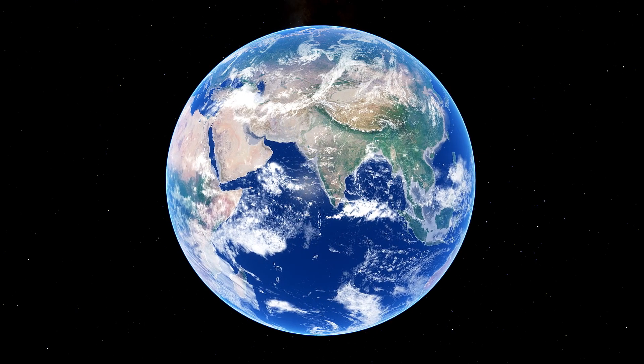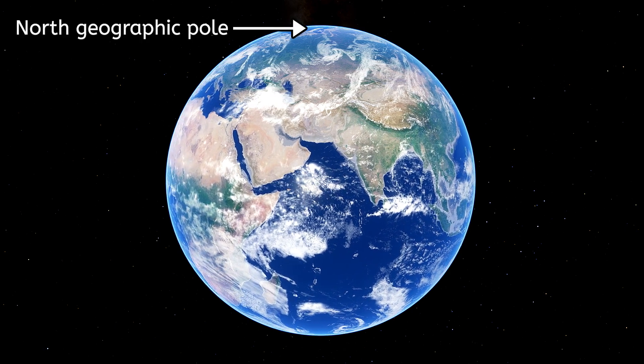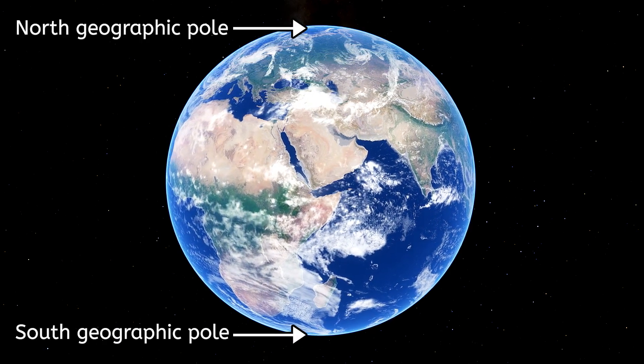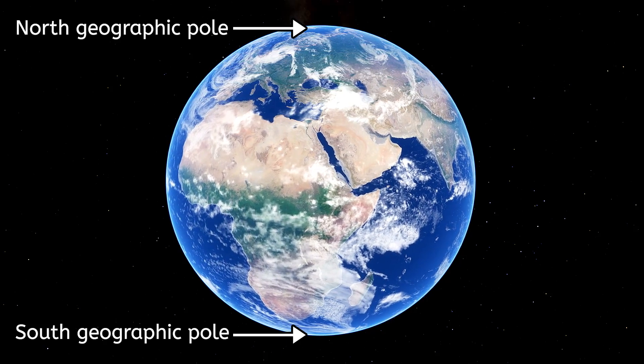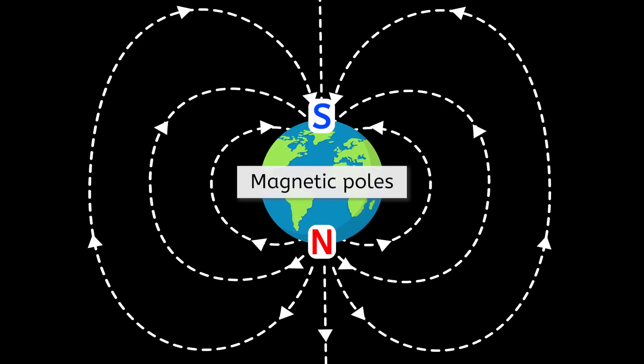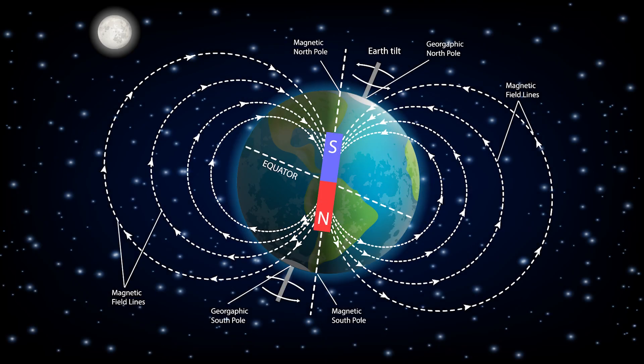We are used to thinking of Earth as having its north pole at the top and south pole at the bottom. But those are the geographic poles. The magnetic poles are just the opposite. The north pole is actually at the bottom of Earth, in the southern hemisphere. So if we want to think of Earth as a bar magnet, it actually looks like this.